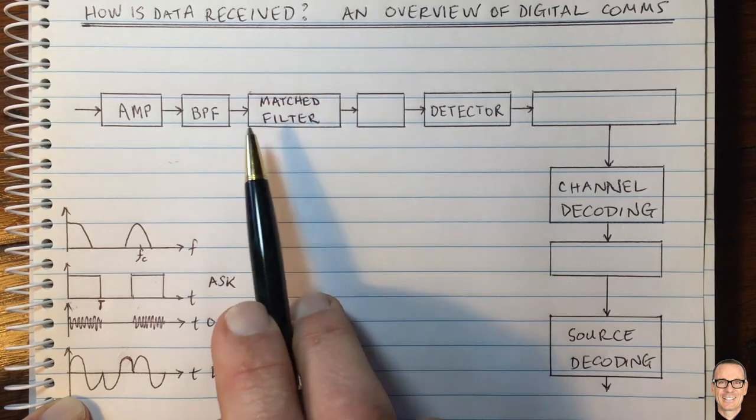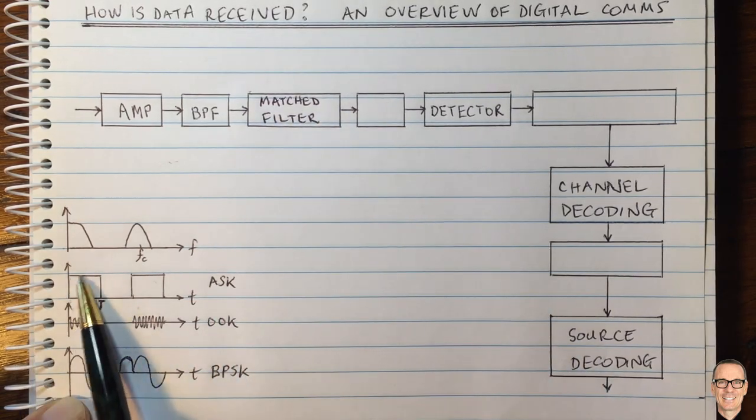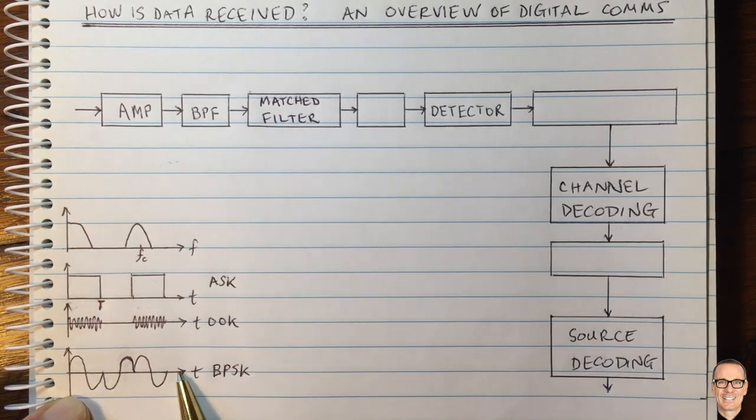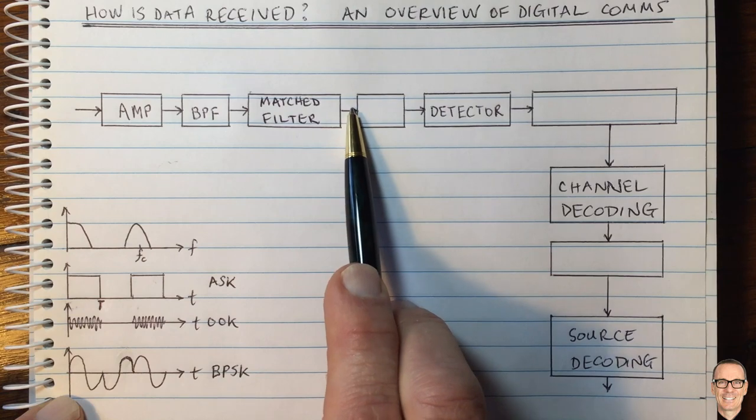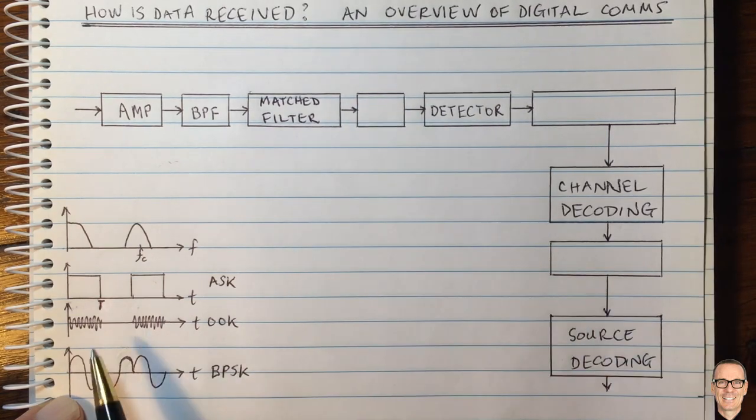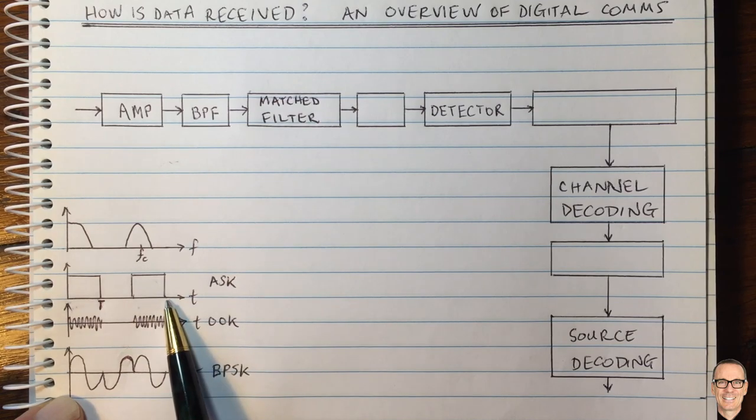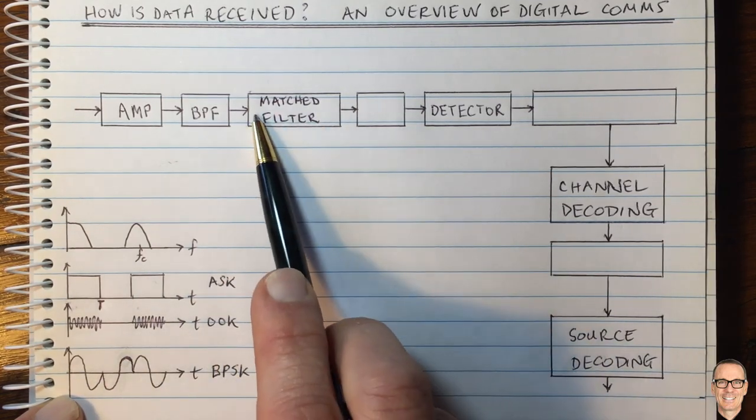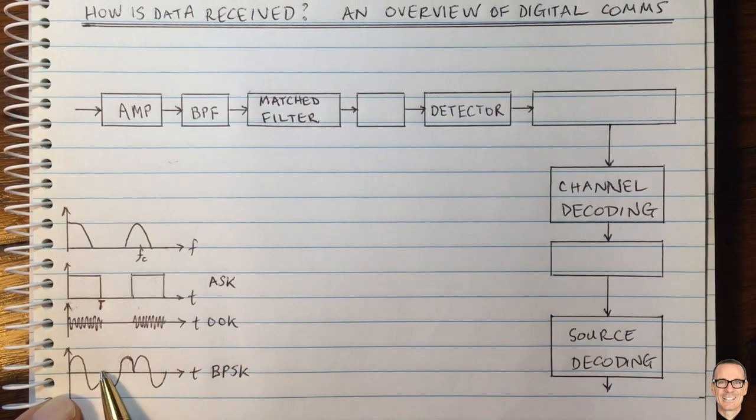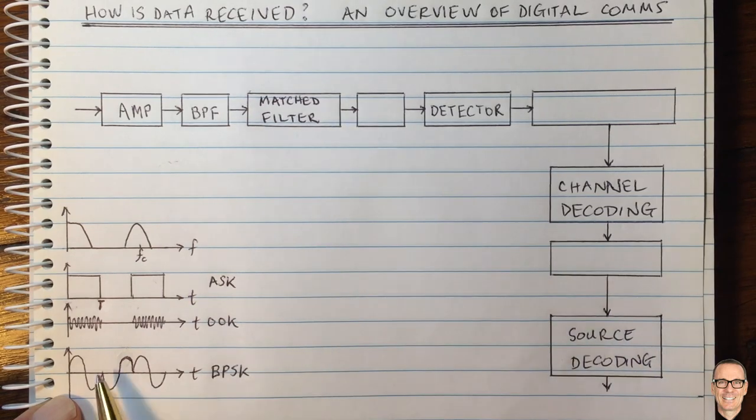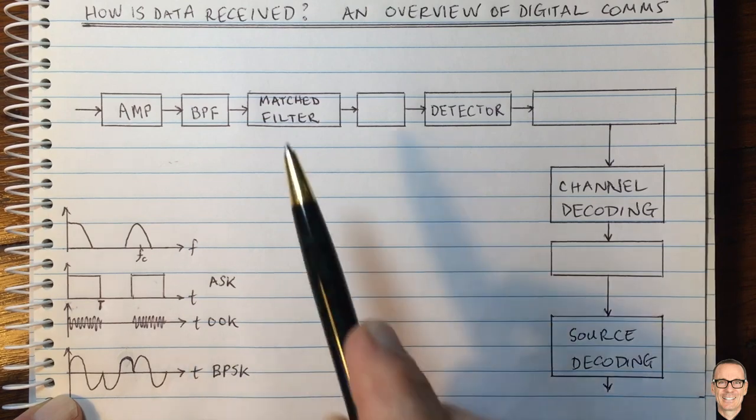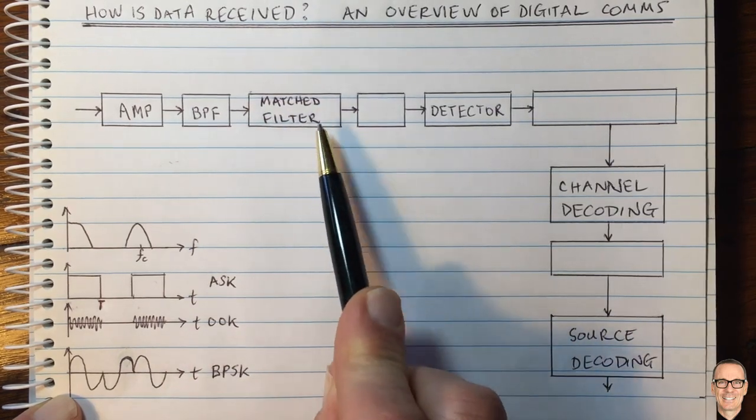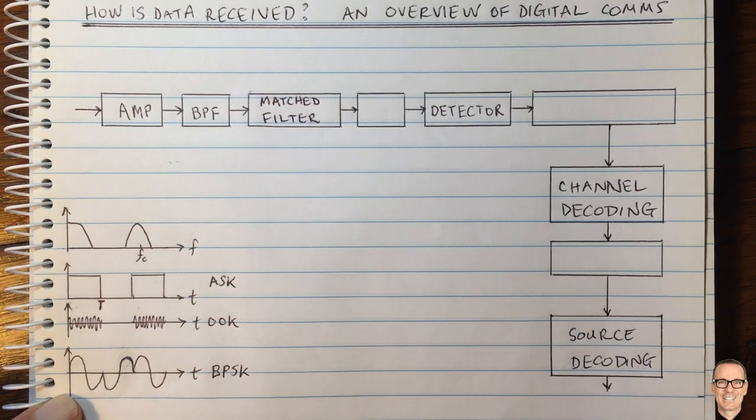The matched filter has an impulse response which matches the waveform we're using to send. In the wireless case, we would have an impulse response matched to this waveform with this phase. At the output of that filter, we sample at time period T, then 2T, 3T, and so on. If it was this waveform, the output would be positive for the first time period because it's matched, negative for the second period, then positive again. There's more details in the link below this video.